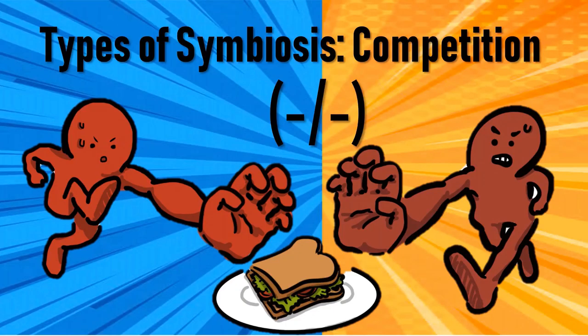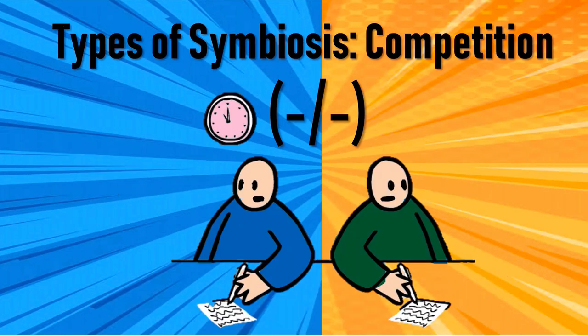Competition is a relationship between two organisms that has a negative effect on both animals. This can happen when two animals are competing for food, land, or for a mate. It's just like you writing your exam seriously to score more than the competitor in class. Sometimes they may win and sometimes you may win, so none of you is actually reaping full benefits from this relationship.